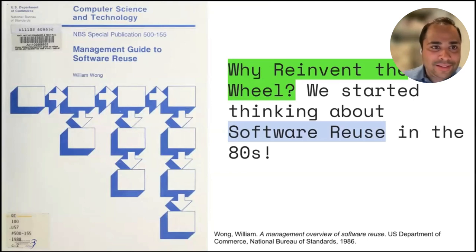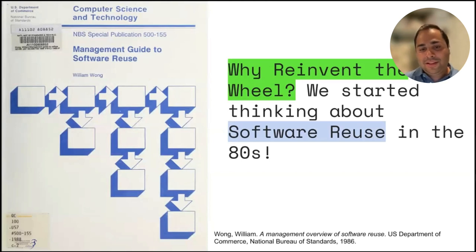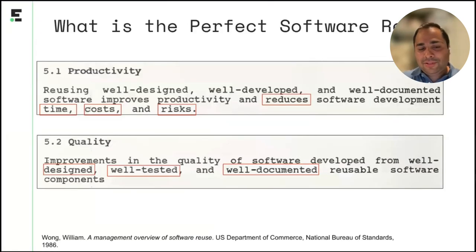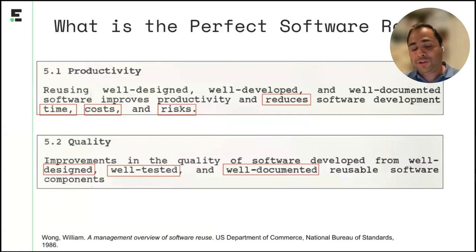I found a great publication from the US Department of Commerce — a management guide to software reuse. They define a couple of interesting metrics that are quite relevant still today, around how software reuse helps us to be more productive, avoid risks, and cut development costs. There's an outline of two very important aspects: it tries to reduce software development time, costs, and risks. The idea is that if we are reusing components, they should be well designed, well tested, and well documented. All of this was already discussed and defined back in 1986.